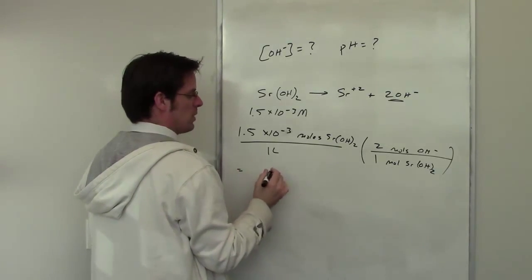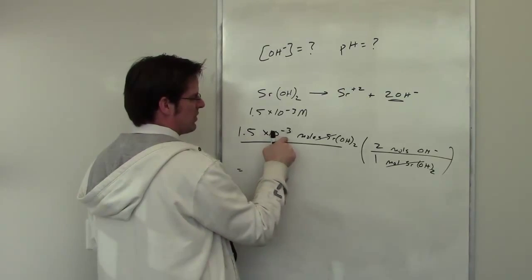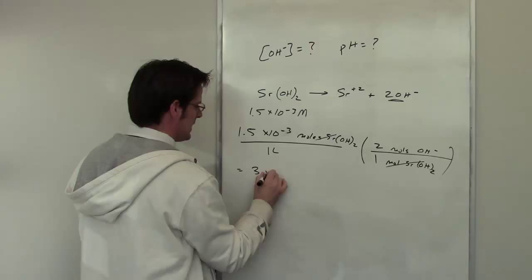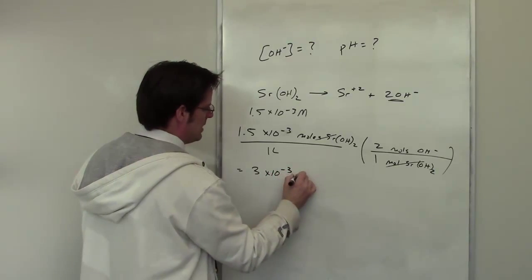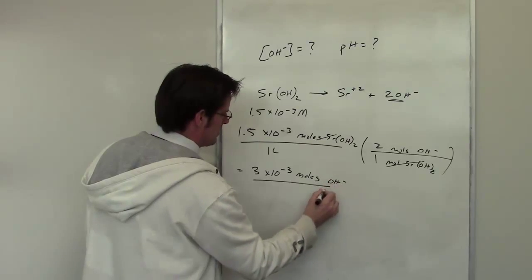I throw that in my calculator or my brain and you'll see that if my solution starts out as 1.5 × 10^-3 molar strontium hydroxide, it ends up being 3 × 10^-3 moles per liter or molar of hydroxide product.